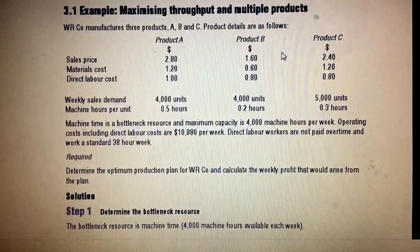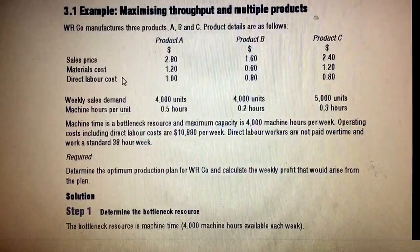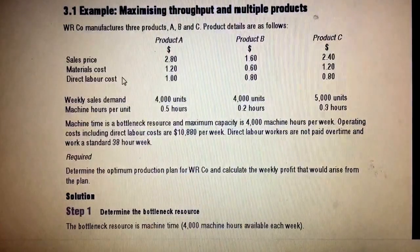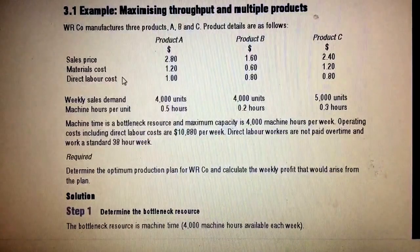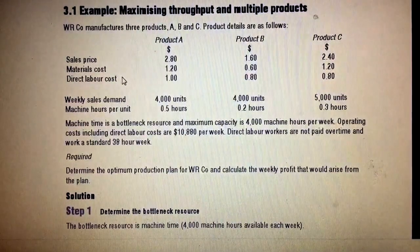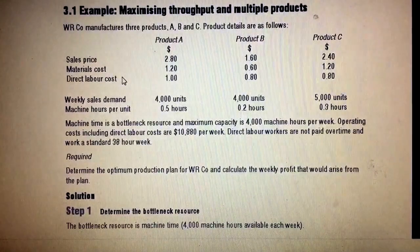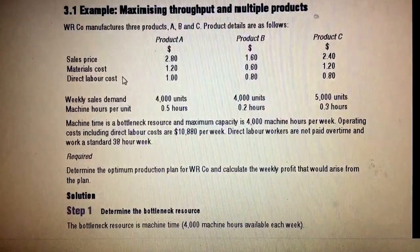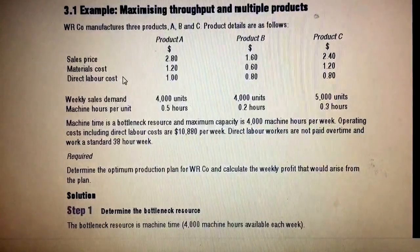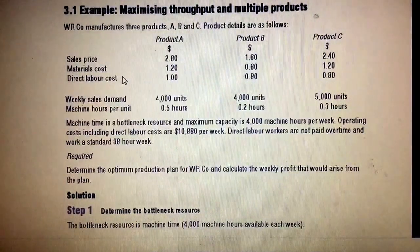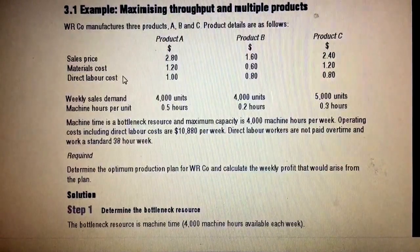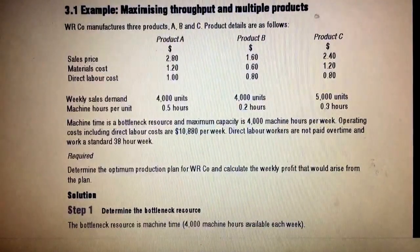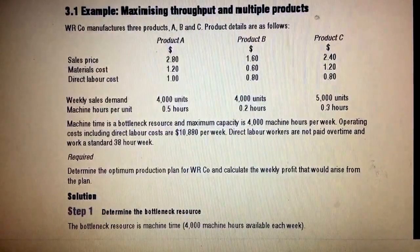Here's an example: a company producing three products. The selling price is given to you and material cost is given to you. In limiting factors, we take into account all variable costs when calculating contribution. But in throughput accounting, we only use selling price less material cost. It is assumed that labor cost is fixed and should be counted as a total company overhead.